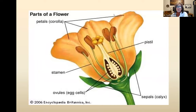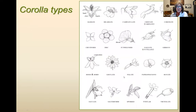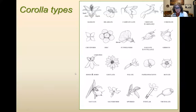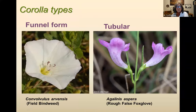The petals collectively are called the corolla, and the sepals collectively are called the calyx. From that kind of typical flower type, we quickly realize there are lots of other shapes and forms flowers can take — there's a daisy type, tubular ones, orchids. Let's talk about a couple of those different types.